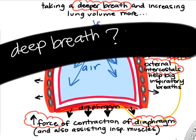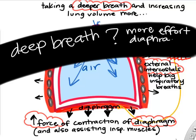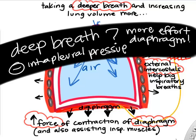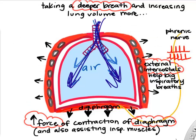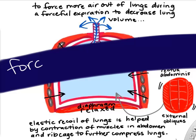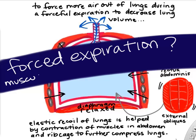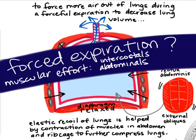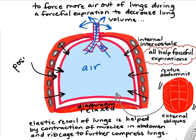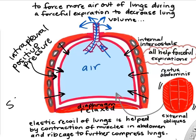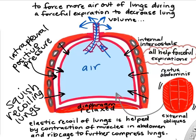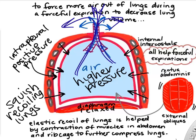To take a deep breath, you need more muscular effort from the diaphragm — contracting really hard creates a very negative intrapleural pressure, the lungs expand to a greater extent, and you get more air flow and greater volume. For a forced expiration, you use accessory muscles like intercostal muscles and abdominal muscles — the rectus abdominis and the obliques — which create a positive intrapleural pressure that squeezes the lungs, forcing more air out in addition to their own elastic recoil.